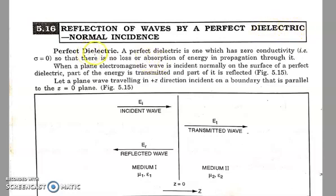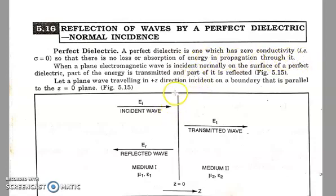Now what is a perfect dielectric? It is one which has zero conductivity, that is sigma equals zero, meaning the surface charge density is zero, so that there is no loss or absorption of energy in propagation through it. That means no energy is lost within the medium.